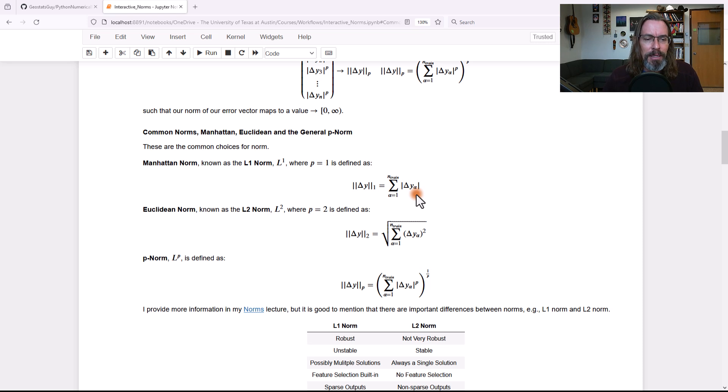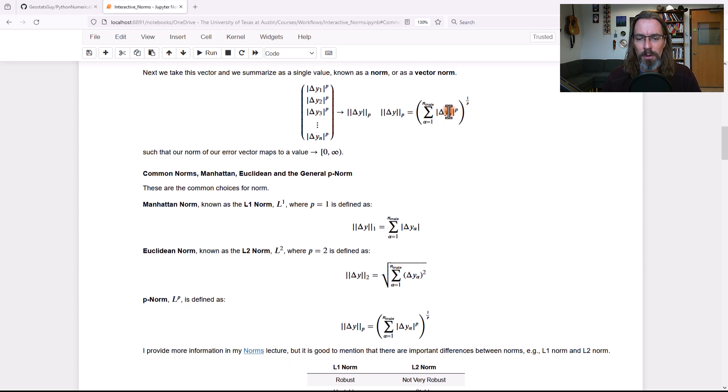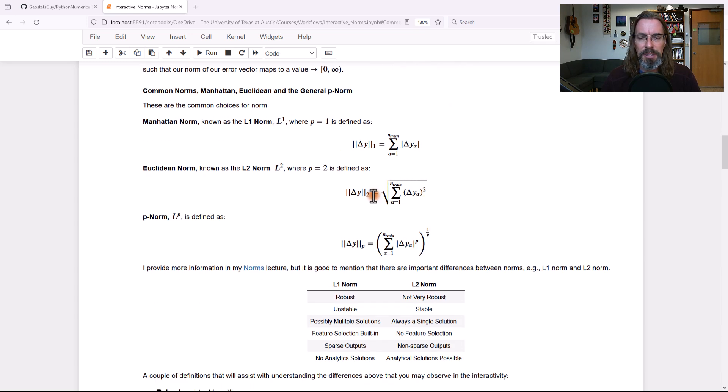Euclidean norm, it is the L2. This is where p is equal to 2. And if you substitute p equals 2 in this general equation, you'll see that it turns into this representation right here. I remove the absolute values because we're squaring, we're not worried about negative values, but you could put the absolute value in there. It doesn't matter. And the general p norm, Lp, is represented with the equation that I just showed.